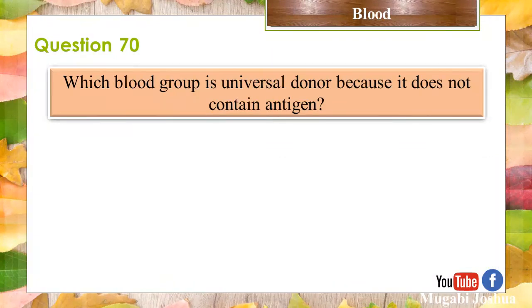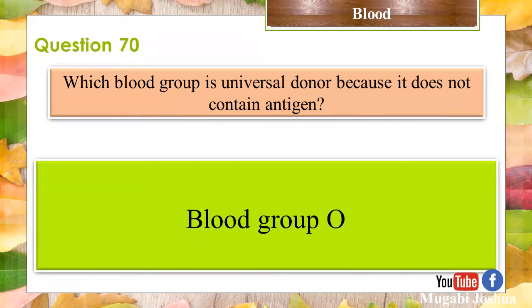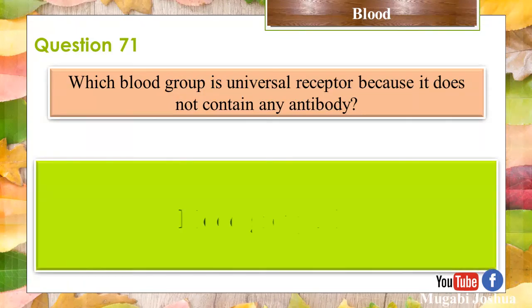Question 70: Which blood group is a universal donor because it does not contain antigen? Blood group O. Question 71: Which blood group is a universal receptor because it does not contain any antibody? Blood group AB.